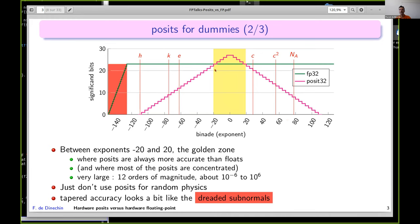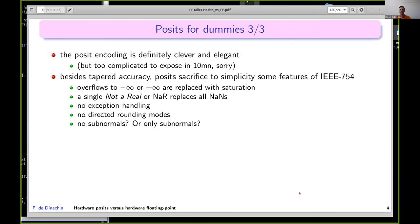This shape here looks like what happens in the subnormal zone. Subnormals are considered a bit fighting, a bit demoniac, and actually posits are a bit like that all over the place. The posit encoding is definitely clever and elegant but too complicated for me to present. Either you've seen it already or you have to believe me. The main focus was on tapered accuracy, giving more bits to the significand where it's useful. But posits also sacrifice to simplicity many features of IEEE. You don't have infinities; the overflows are replaced with saturation.